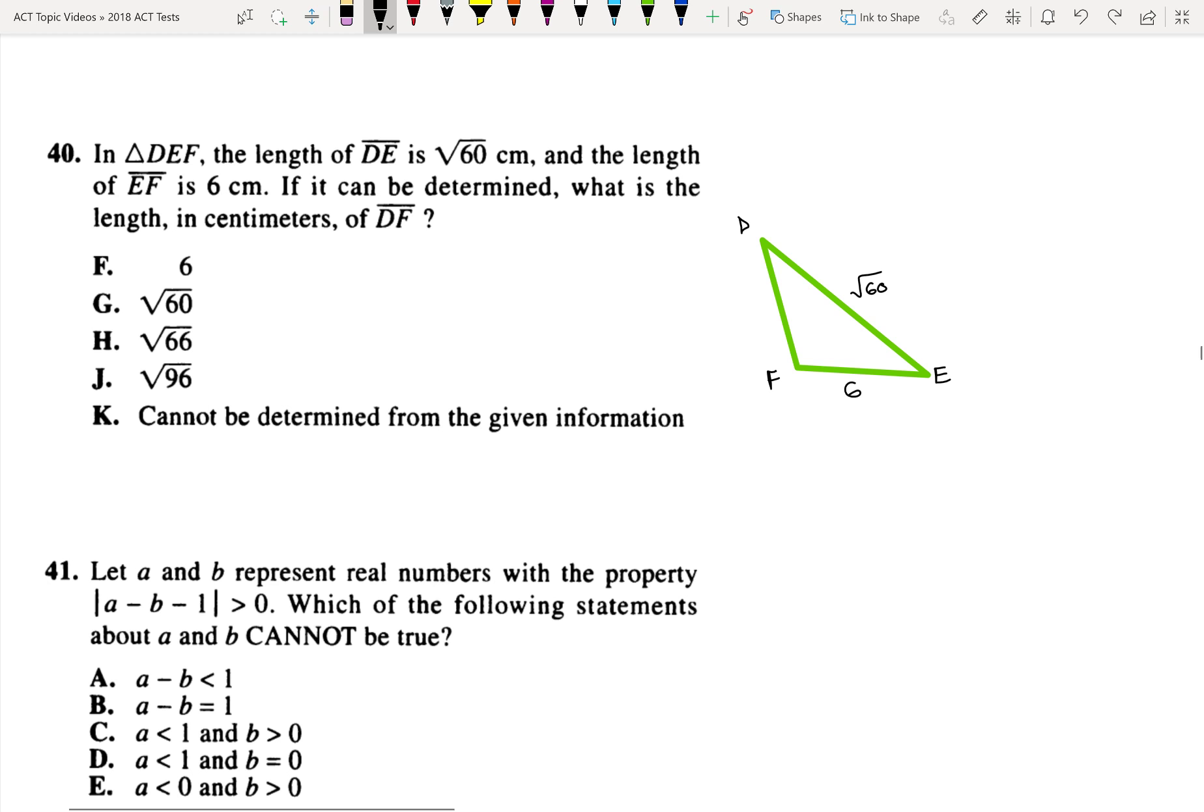So basically what I'm saying is it cannot be determined. Because like I said, first I tried Pythagorean, it doesn't work, it's not a right triangle. Try SOHCAHTOA, I can't do it, it's not a right triangle. Law of cosines, which is for when it's not a right triangle, but even for that, you need an angle to do law of cosines. We don't have it. So the answer must be K.